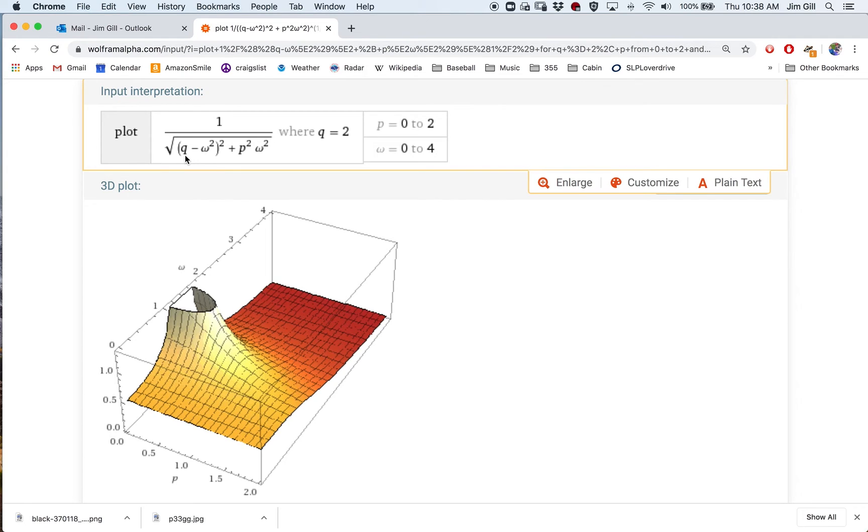This is that same function: q minus omega squared, squared, plus p squared times omega squared. I'm just going to fix q, the spring constant, to be two. We're going to fix one variable and look at the other two.